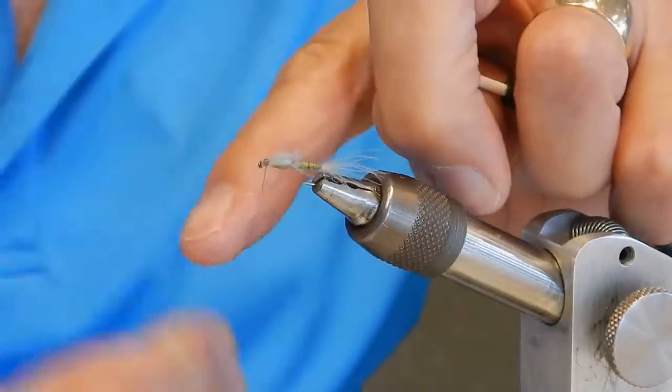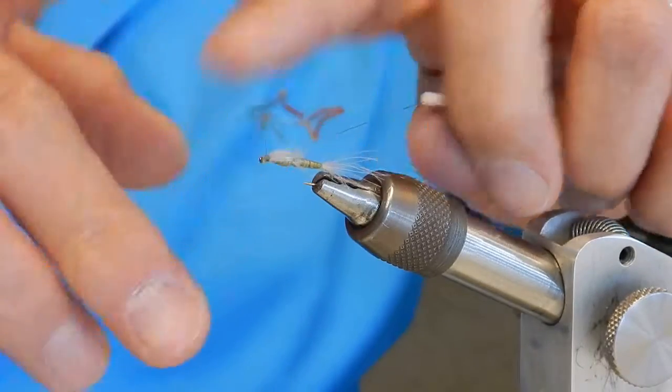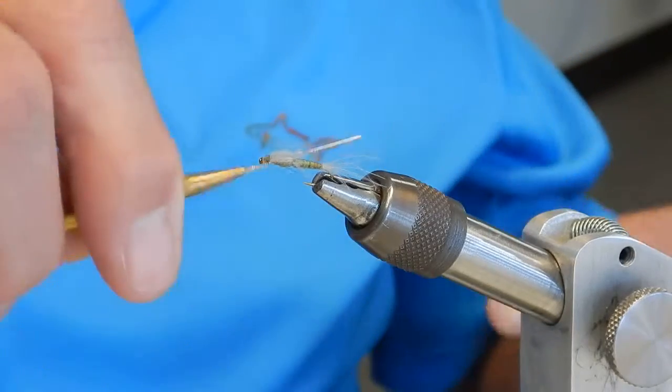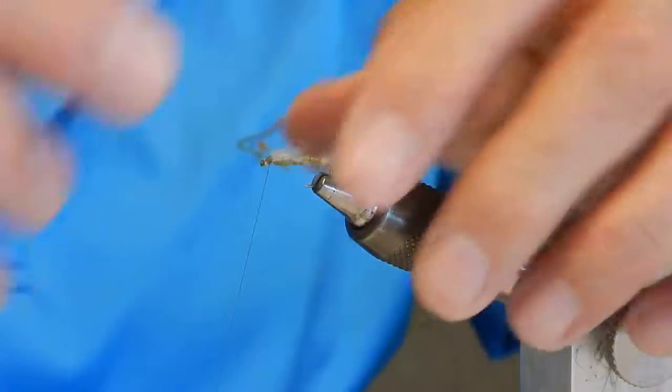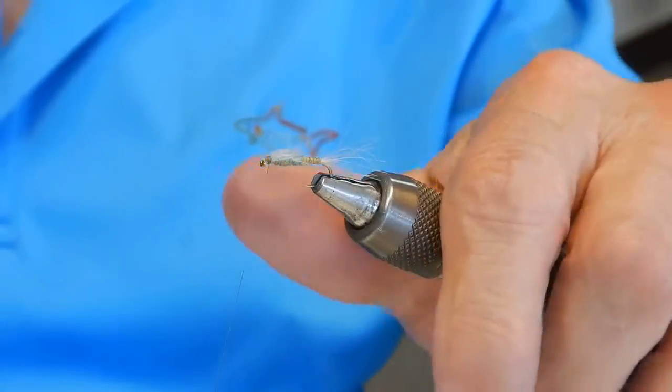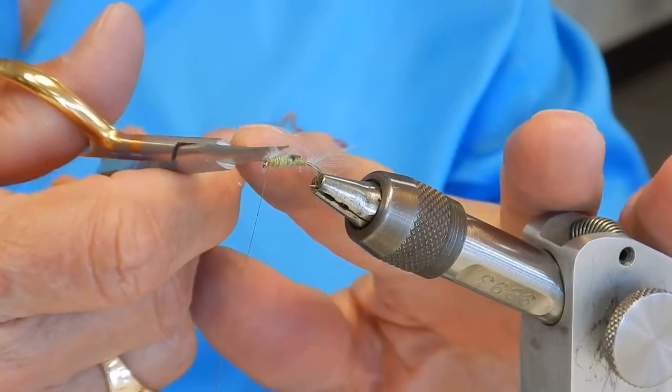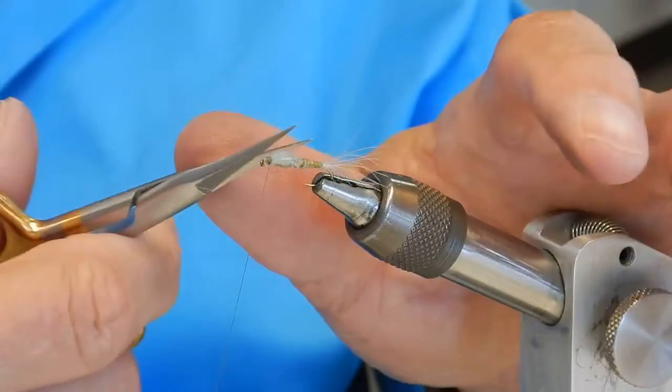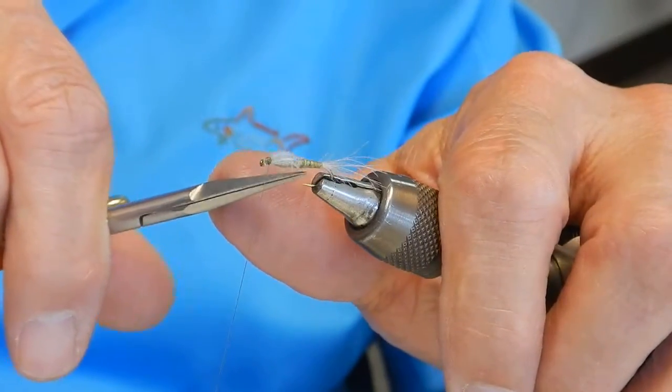And this is like any other C.V.C. fly, except in this case, you want it floating really flush, not high and dry. So your goal is just to keep it on the surface film so you can see it. You can also fish it behind the dry so you don't have to worry about where it is so much.